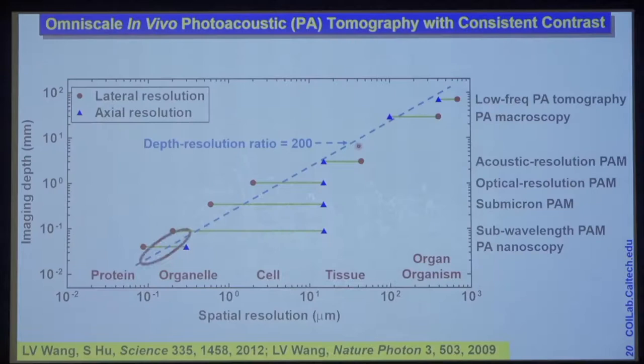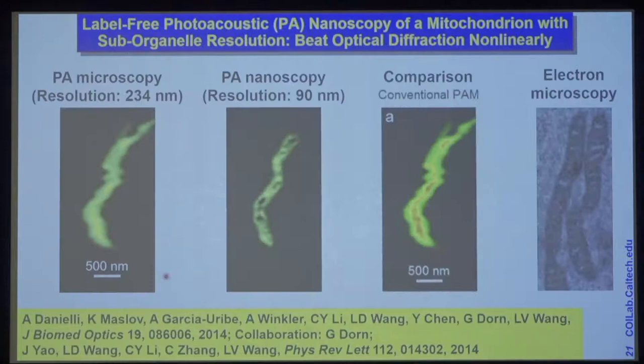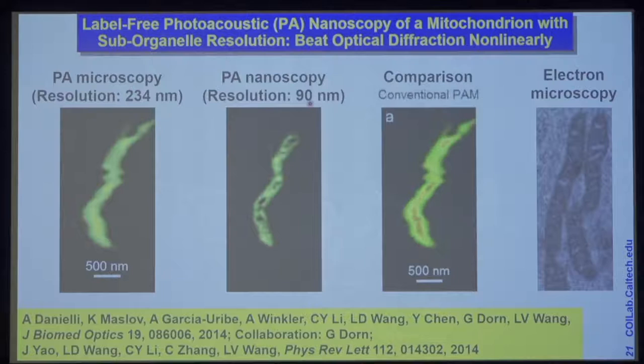We can scale down even further for finer resolution by using non-linearity — now we're talking about organelle-level imaging with about 100 microns penetration. A standard diffraction-limited resolution image can see mitochondria but doesn't resolve internal structure. But using nonlinear photoacoustics, we can push the resolution to 90 nanometers, which allows us to resolve some of the internal structures within mitochondria. Here's a comparison alongside an EM micrograph.